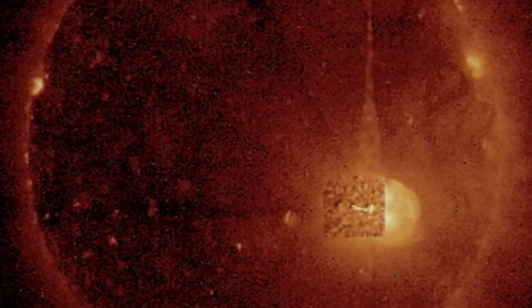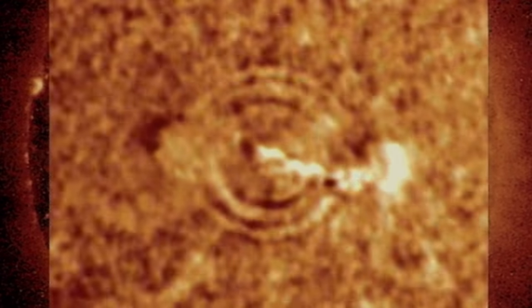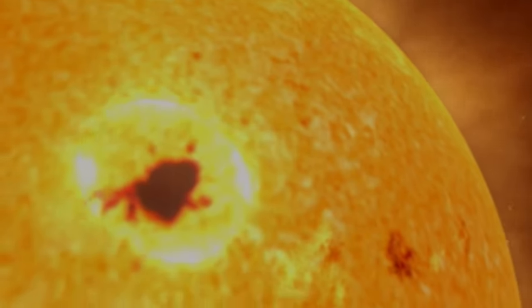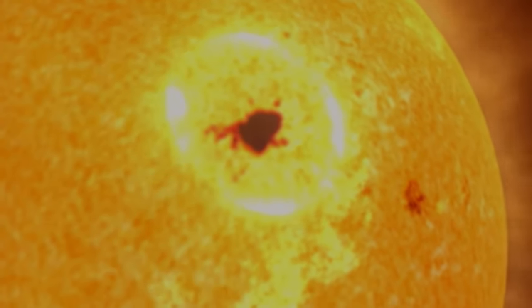One solar flare packs enough energy to power America for thousands of years. In 1997, NASA captures this image of the Sun's surface the moment after a solar flare explodes. It shows a shock wave, a ripple, racing thousands of miles across the surface. It travels so fast, it could circle the Earth in less than a minute.